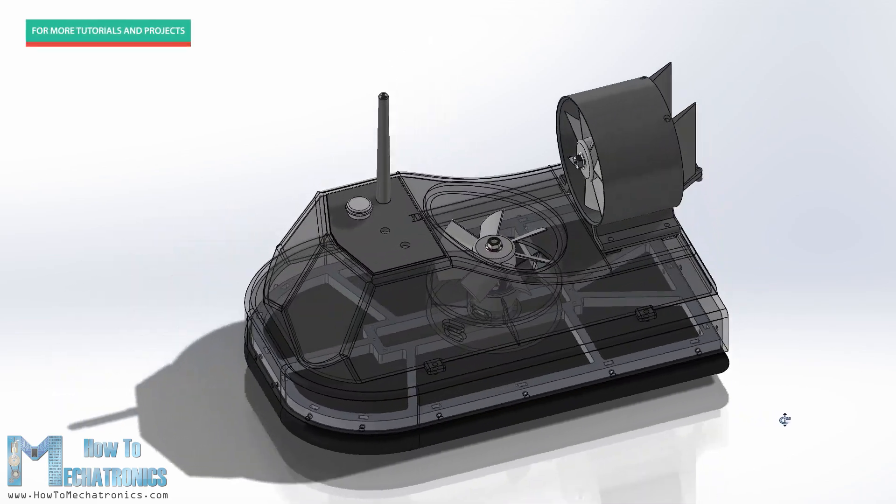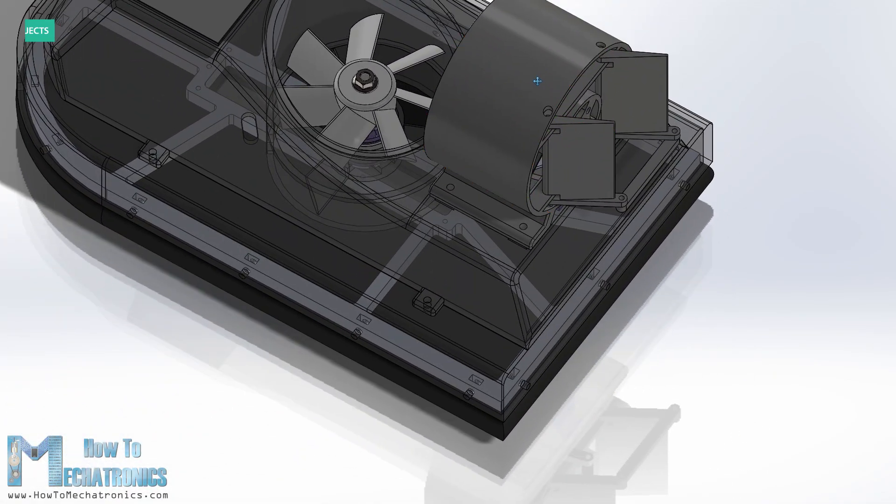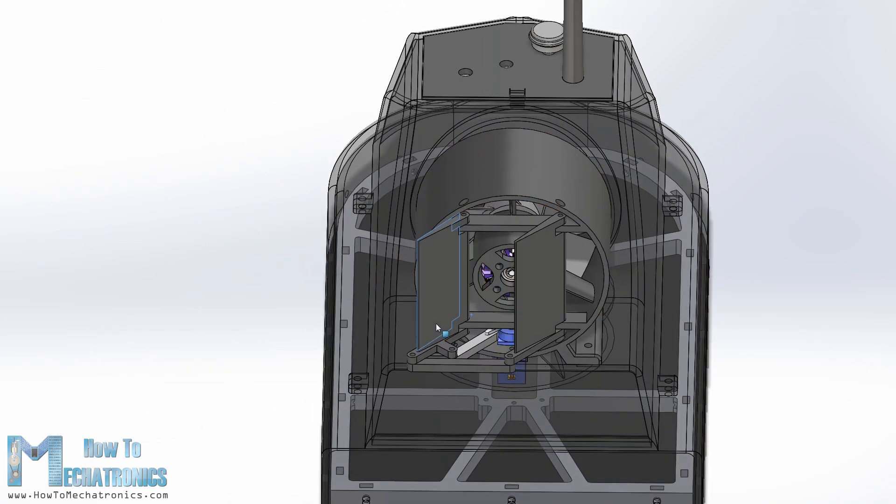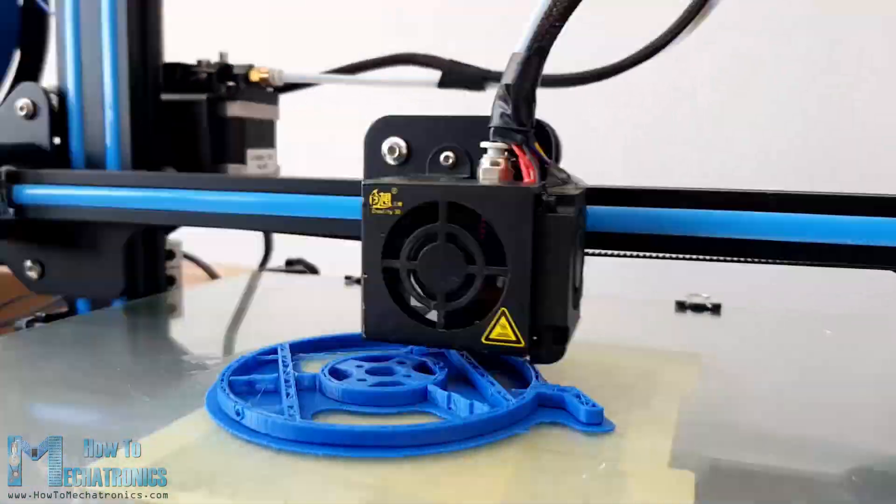Once lifted, using the second propeller, a thrust is generated, which moves the hovercraft forward. On the back side of the thrust propeller, there is a simple set of rudders which are utilized for steering the hovercraft. Nevertheless, once I finished the design I started with 3D printing the parts.